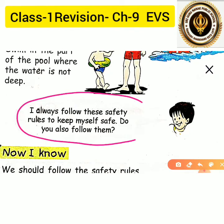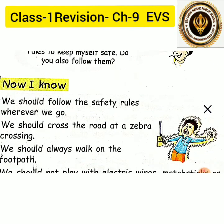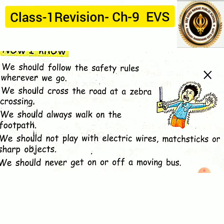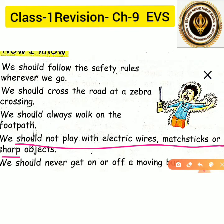Always follow these safety rules to keep yourself safe. We should follow safety rules wherever we go. We should cross the road at a zebra crossing, always walk on the footpath, not play with electric wires, matchsticks, or sharp objects, and never get on or off a moving bus.